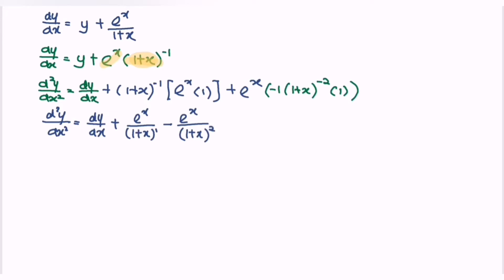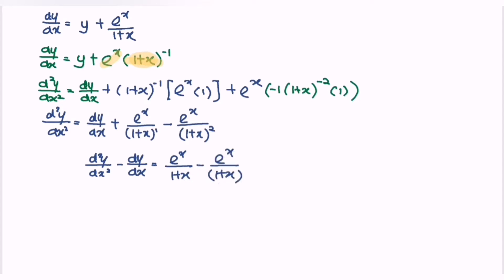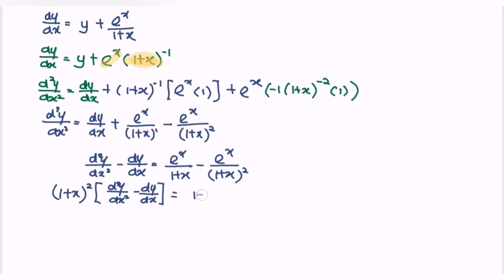The question asks us to show a specific result, so I transfer the first derivative from the right to the left: the second derivative minus the first derivative equals eˣ over (1 plus x) minus eˣ over (1 plus x) squared. Multiplying both sides by (1 plus x) squared gives (1 plus x) squared times [second derivative minus first derivative] equals (1 plus x) times eˣ minus eˣ.